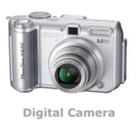Digital cameras store photographic images in digital formats directly onto memory or magnetic media. These images can then be downloaded into a PC.